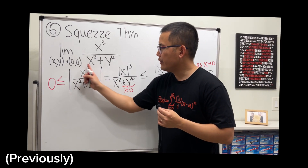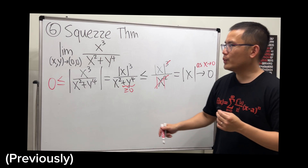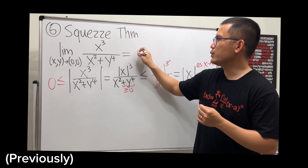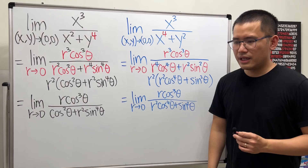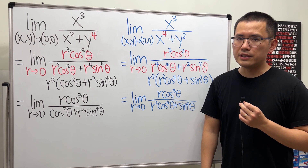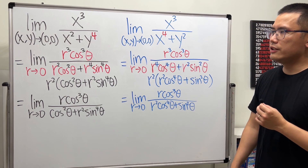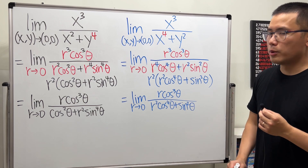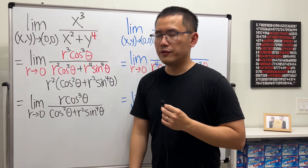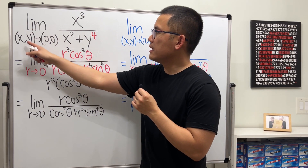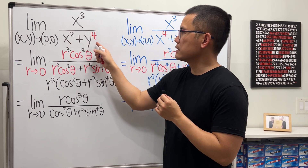This is a continuation from the previous video. I want to talk about being extra careful when we use polar coordinates to evaluate the limit of a multivariable function. The example from the previous video was the limit as (x,y) approaches the origin of x³ over (x² + y⁴).